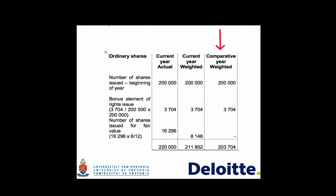In this example, the company had 200,000 shares at the beginning of the current year, and also 200,000 shares at the beginning of the prior year. No movement in shares took place in the prior year. During the current year, 20,000 shares were issued in terms of a rights issue.